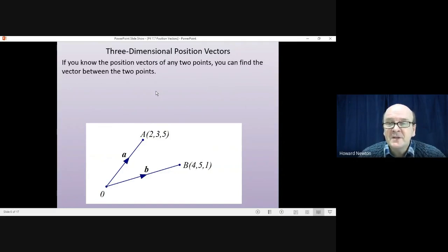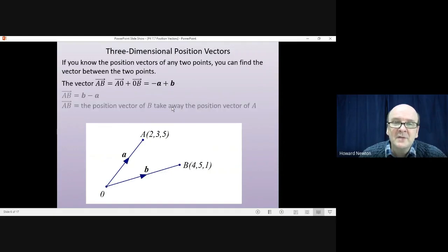If you know the position vectors of any two points, you can find the vector between those two points. So the vector from A to B would be AO plus OB, which is minus A plus B. And we can always rewrite that as B minus A. So the vector from A to B is the position vector of B take away the position vector of A.